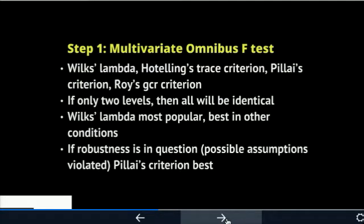In step one, what you're going to be looking for most commonly is Wilks-Lambda. The SPSS output will give you Hotelling's Trace, Pillai's Criterion, and Roy's GCR. Roy's GCR is only used for Roy's step-down analysis, so you don't look at that here. Wilks-Lambda is the default, and Pillai's is used if you have questions about Box's M or the assumption of the variance-covariance matrix. If you only have two levels on your independent variable, all four will be identical. Wilks-Lambda is the most popular and Pillai's Trace is the backup plan.